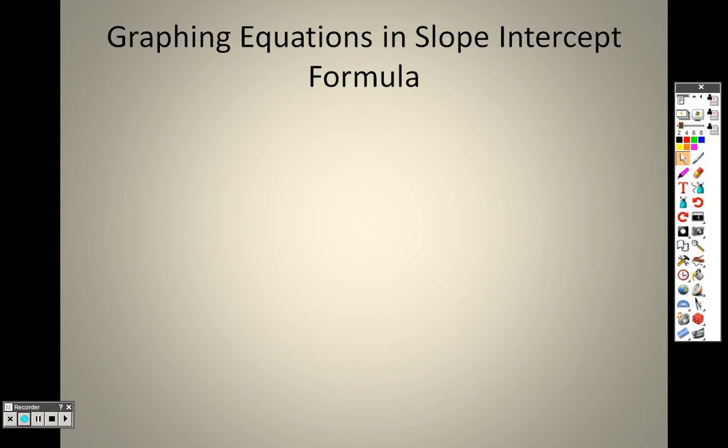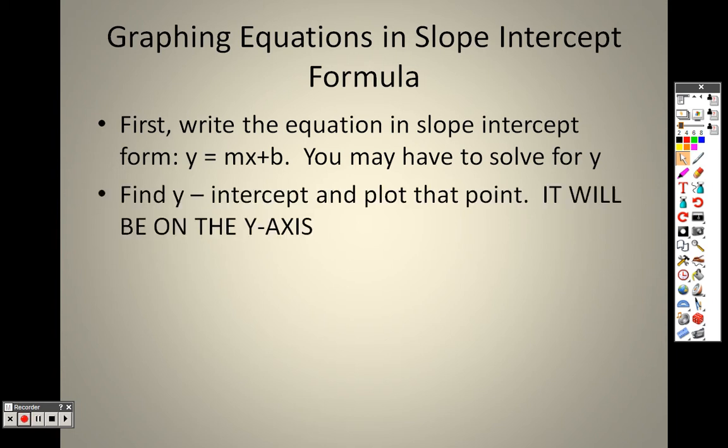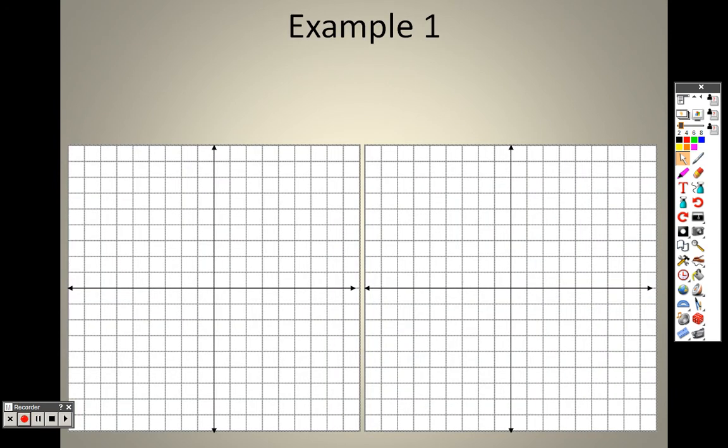So graphing equations in slope-intercept form. First, you need to make sure that the equation is written in slope-intercept form. If it's not, you need to solve the equation and make it written in that form. So you might need to solve for y in order to get it to be like that. Then find the y-intercept and plot that point. It will be on the y-axis. And then you find the slope and you use it to form a second and third point, or more if need be. And then you draw a line to connect them.